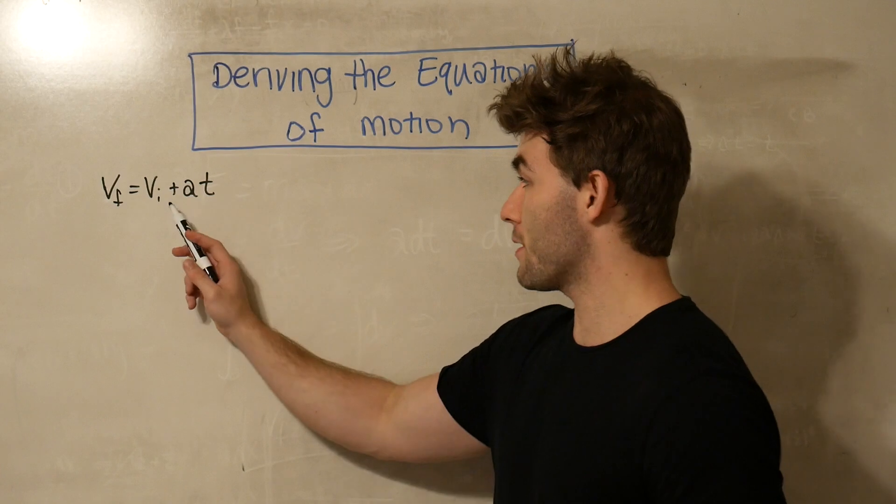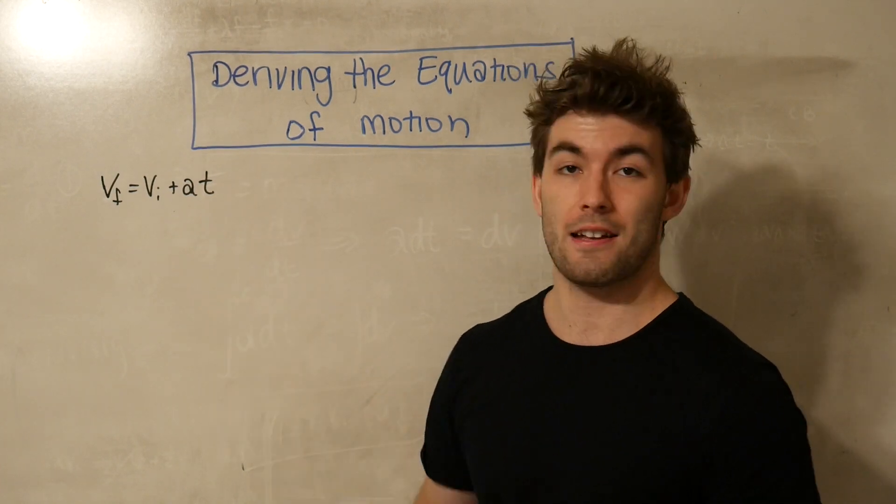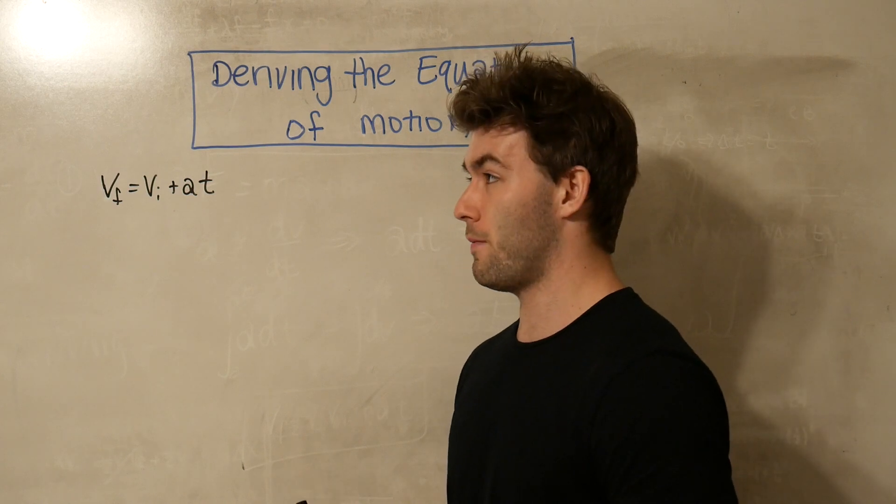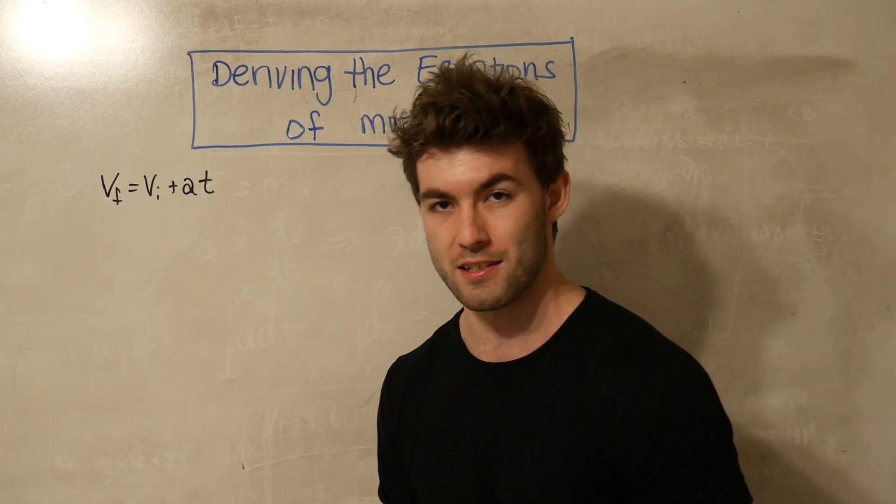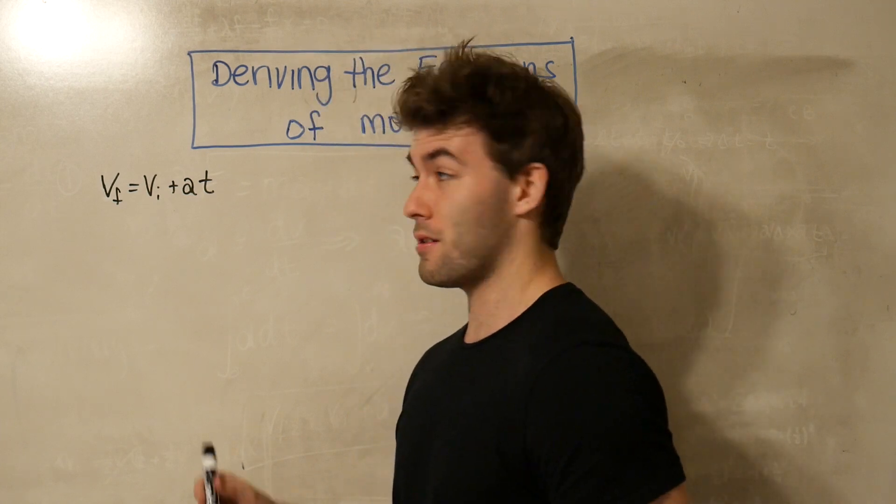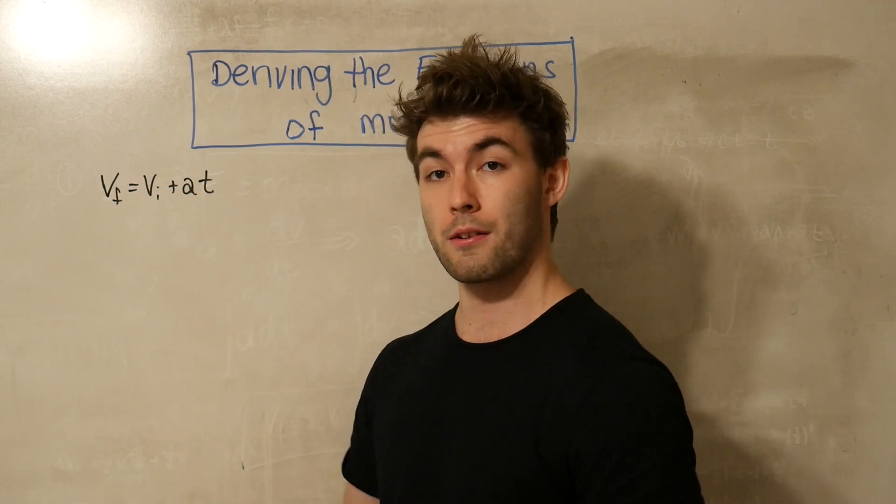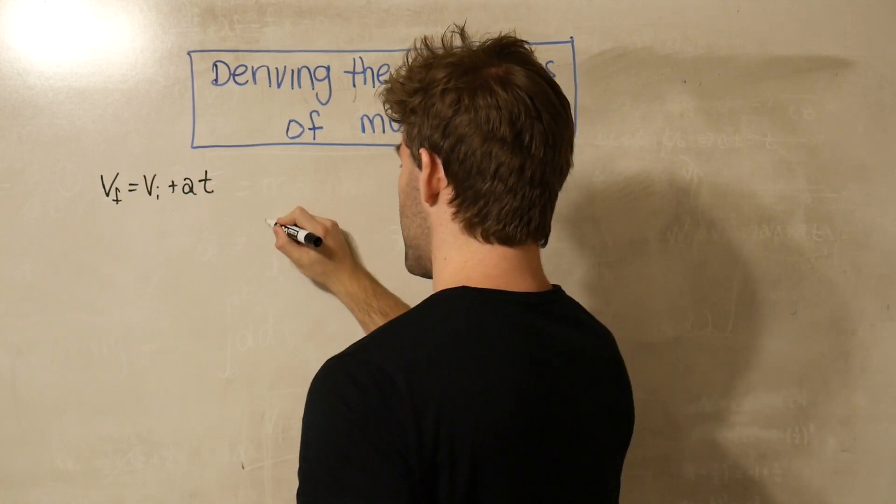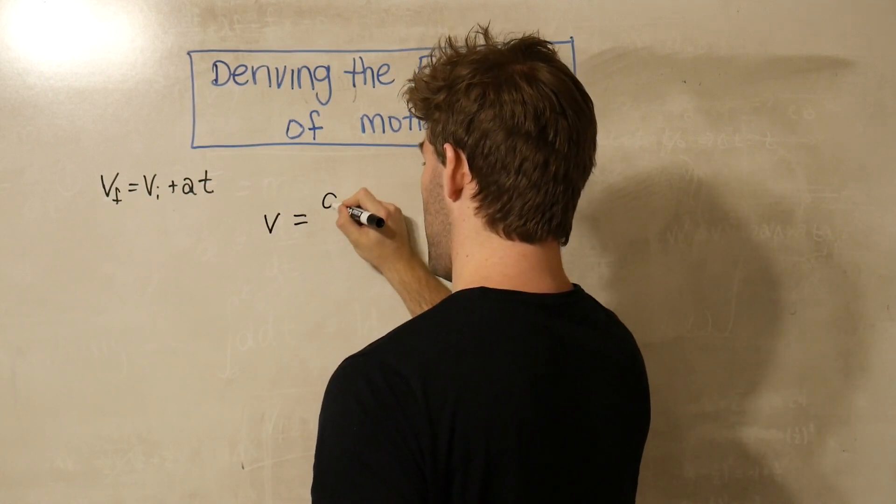All right, so we just derived the first equation of motion, and we're actually going to use that to derive the next equation. Now, the next equation is going to come from defining what velocity is in the same way that we initially defined what acceleration was and we got the first equation. So if we define some velocity equal to a change in position over a change in time,